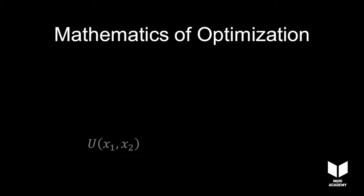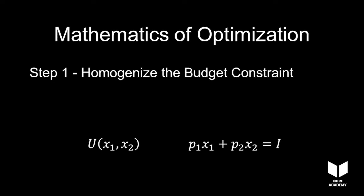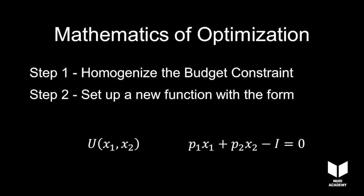How do we maximize our utility without violating our budget constraint? Step 1: Turn the budget constraint into the homogeneous form. That is, take everything to one side so that only zero is left on the other. Step 2: Set up a new function of the following form: utility function plus...